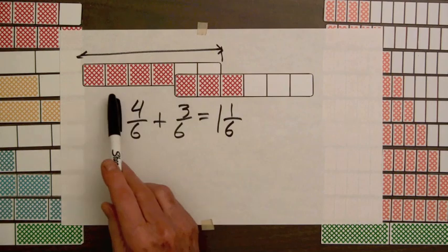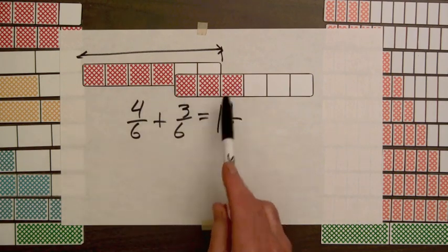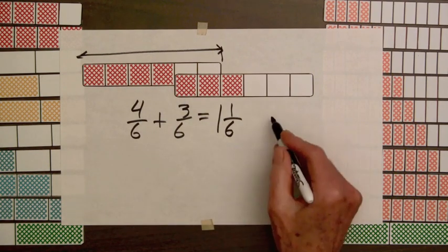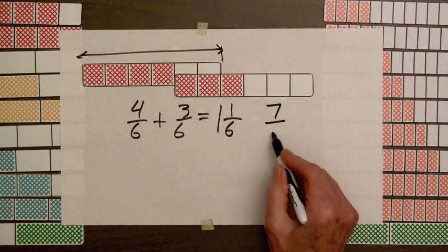Since these parts have the same size, we count 1, 2, 3, 4, 5, 6, 7, and see that there are 7 total parts.